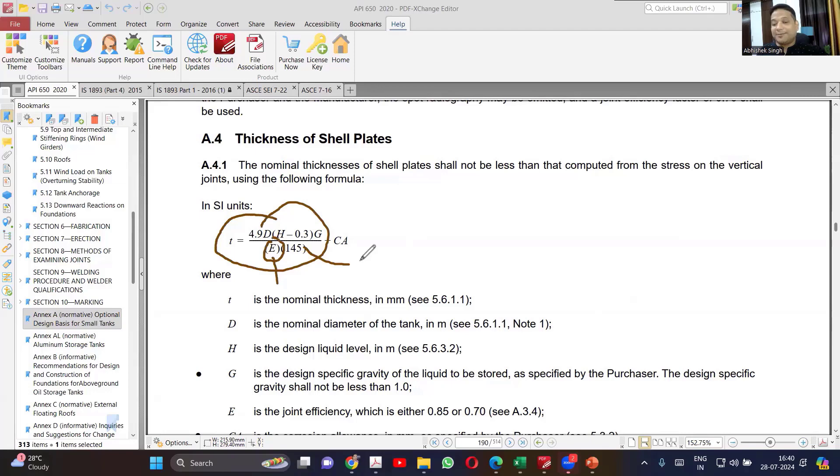S value - you don't have any option, you have to select 145 for all the cases. Now, what is the advantage of using Annexure A?